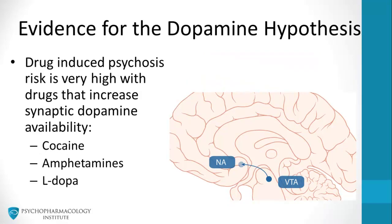What is the evidence that backs up the dopamine hypothesis of schizophrenia? The risk of drug-induced psychosis is very high with drugs that increase synaptic dopamine availability. This includes drugs such as cocaine, amphetamines, and levodopa. In fact, psychosis can be a potential complication for patients suffering from Parkinson's disease treated with levodopa.